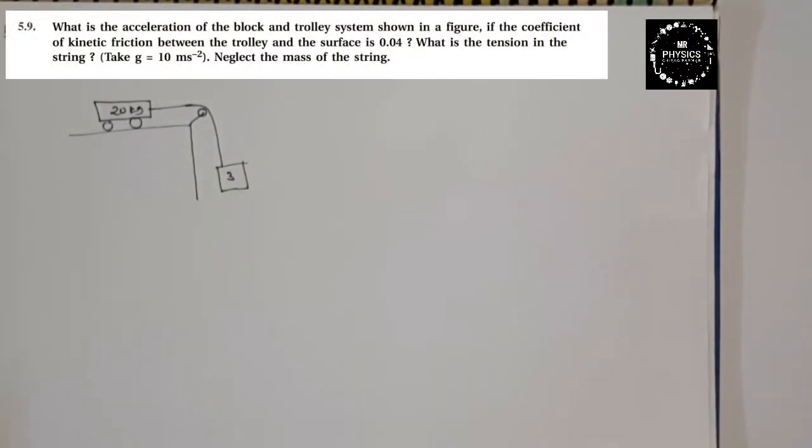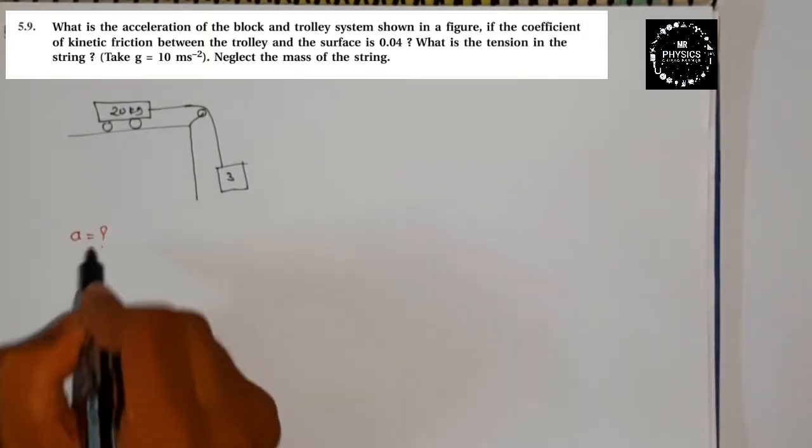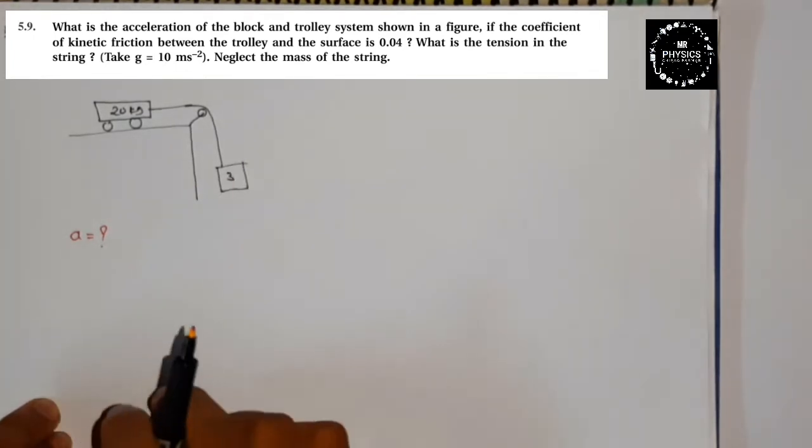Example 5.9, important figure diya hua hai. Pehle samajhte hain ek question. Kya diya hua hai? You can see that what is the acceleration of the block. Pehle equation mein bola acceleration of the block and the trolley system. So is mein figure yaha pe diya hua hai.